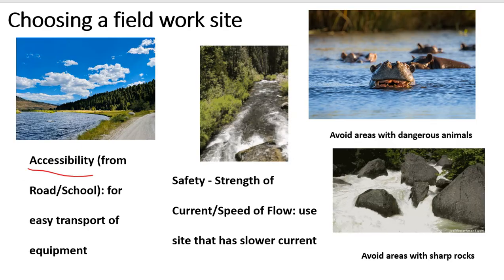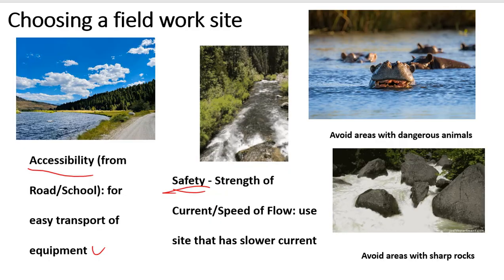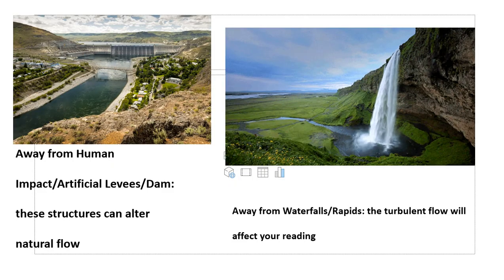Second, check your safety — particularly the strength of the current. If the current is flowing very fast, it is not advisable to carry out fieldwork there. Also check for animals that could endanger your life, and avoid sharp rocks as you can easily slip and fall. Do not carry out fieldwork in areas impacted by human activities such as dams, as data collected will be altered. Also watch out for areas with waterfalls and rapids, as the turbulent flow will affect your readings.